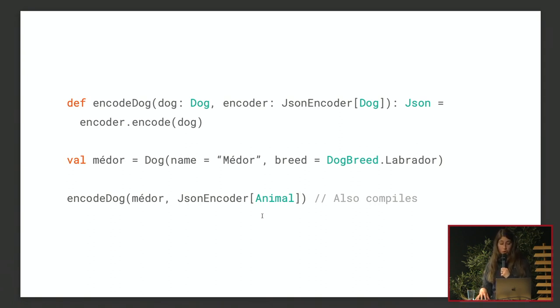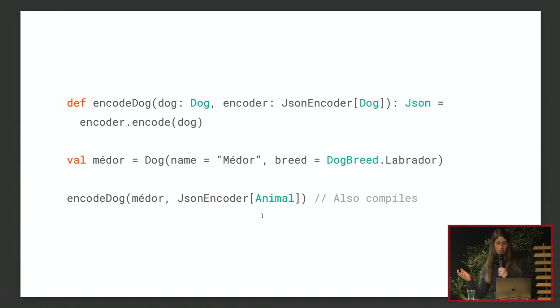The Show type class is another example: it takes an A and gives you a string representation. That's also something that should usually be contravariant.